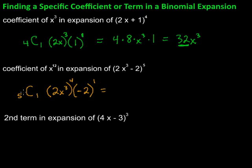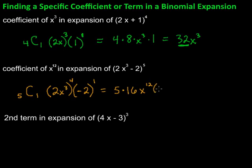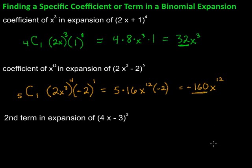So we have 5C1, which is 5. Then we multiply: 2 to the fourth is 16, giving us 16x to the twelfth. Then negative 2 to the first is just negative 2. Multiplying everything together: 5 times negative 2 is negative 10, and negative 10 times 16 is negative 160x to the twelfth. The coefficient for that one is negative 160.